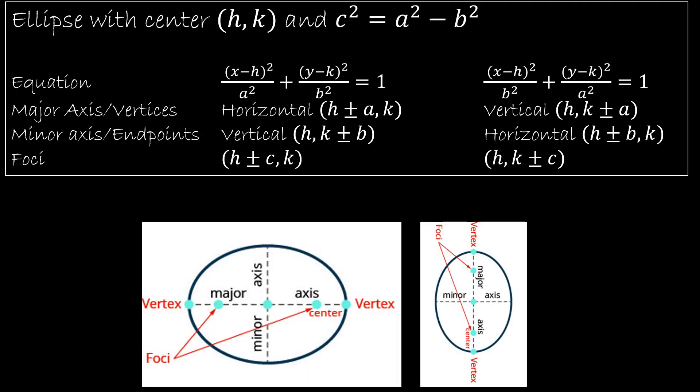Looking now at the ellipse, I hope you can see that the equation looks really similar to that of a circle. So remember, the equation of a circle was (x - h)² + (y - k)² = r². And so the big difference here is that if I have an ellipse with the same a value and b value, it's really just a circle.